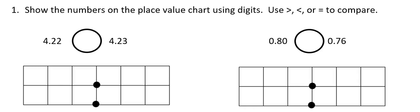The first section says: show the numbers on the place value chart using digits, use greater than, less than, or equal to, to compare. The first numbers I have are 4 and 22 hundredths and 4 and 23 hundredths. I'll start by writing each number on the place value chart.